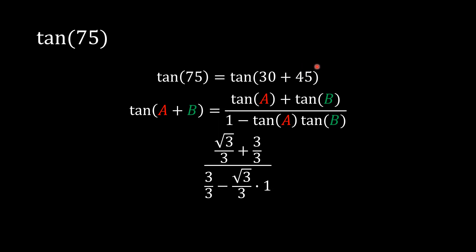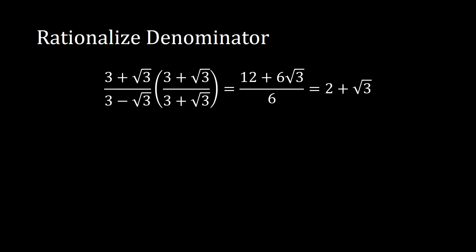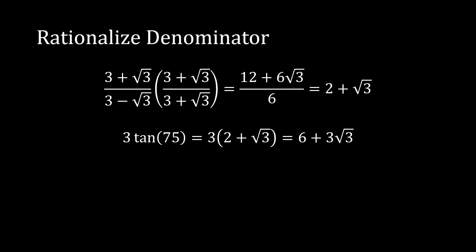Plugging into the formula: tan(30°) plus tan(45°) over 1 minus tan(30°) times tan(45°) gives us (3 + radical 3) over (3 − radical 3). Rationalizing by multiplying by the conjugate (3 + radical 3) over (3 + radical 3), the numerator becomes 9 + 6 radical 3 + 3 = 12 + 6 radical 3, and the denominator becomes 9 minus 3 = 6. This simplifies to 2 plus radical 3. So 3 · tan(75°) = 3(2 + radical 3) = 6 + 3 radical 3.